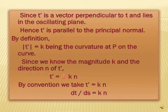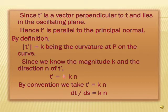Since t′ is a vector perpendicular to t and lies in the osculating plane, t′ is parallel to the principal normal. By definition, |t′| = κ, being the curvature at p on the curve. Since we know the magnitude κ and the direction n of t′, we have t′ = ±κn. By convention, we take t′ = κn, so dt/ds = κn.